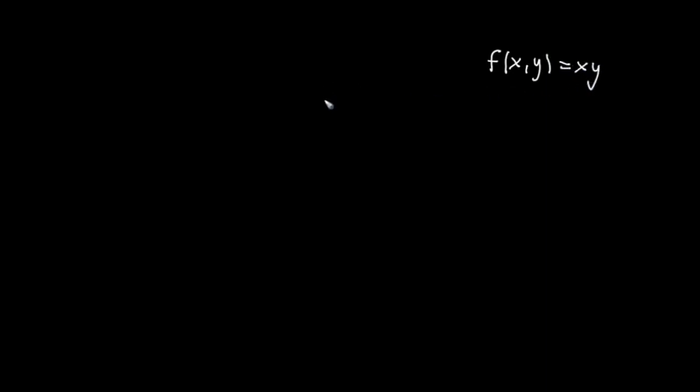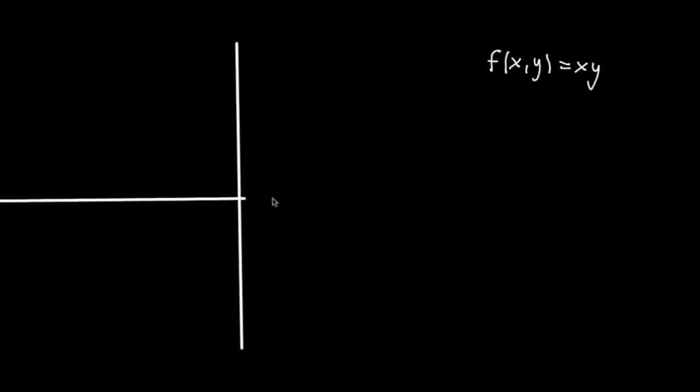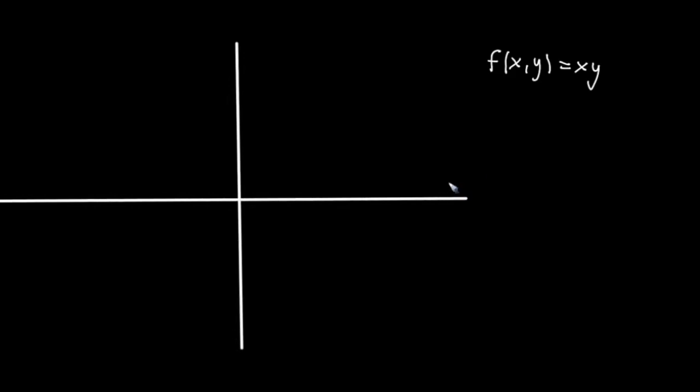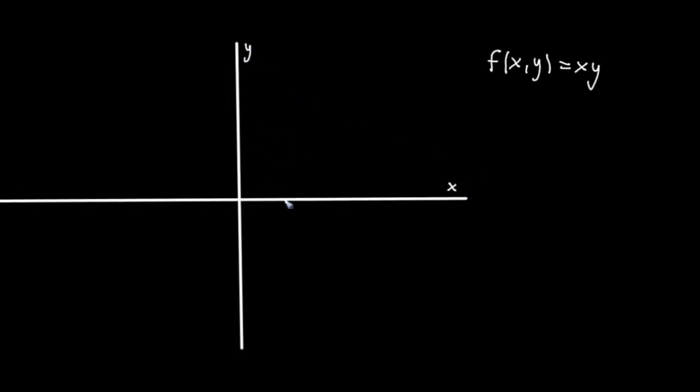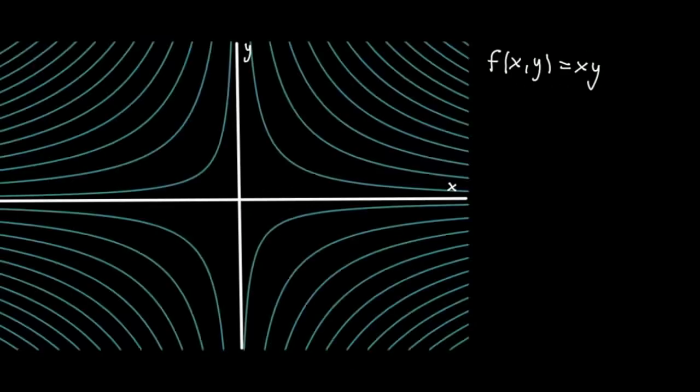We can visualize this with a contour map just on the xy plane. So I'm going to draw my y-axis and my x-axis. This represents x values, this represents y values, and this is entirely the input space. I have a video on contour maps if you are unfamiliar with them. The contour map for x times y looks something like this.